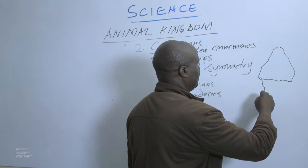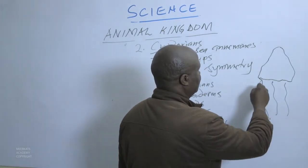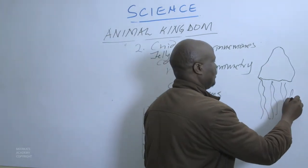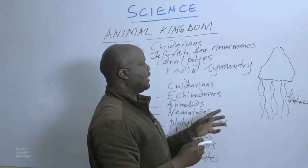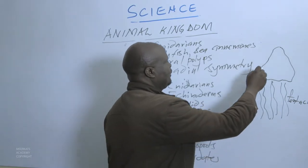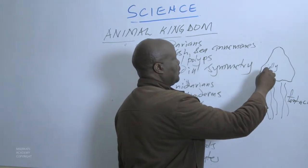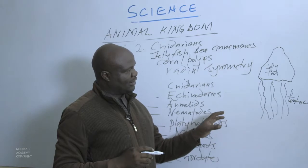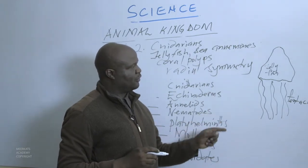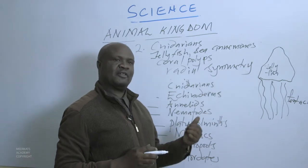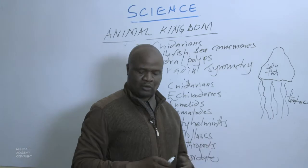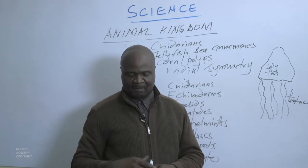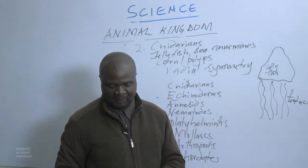A jellyfish is an animal that has tentacles — tall elongated things. These tentacles are poisonous. Once you get entangled in these tentacles, they will sting you and inject you with poison. The poison attacks the heart and causes a heart attack among human beings and also animals in the seas.